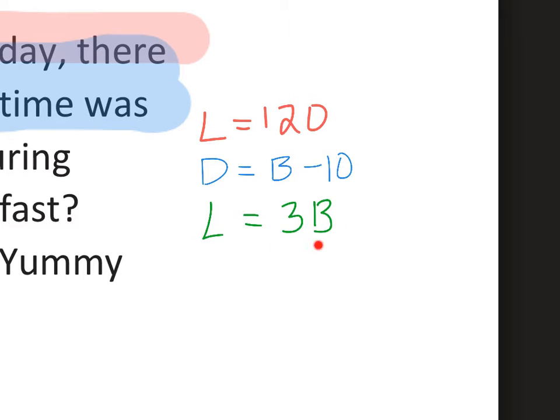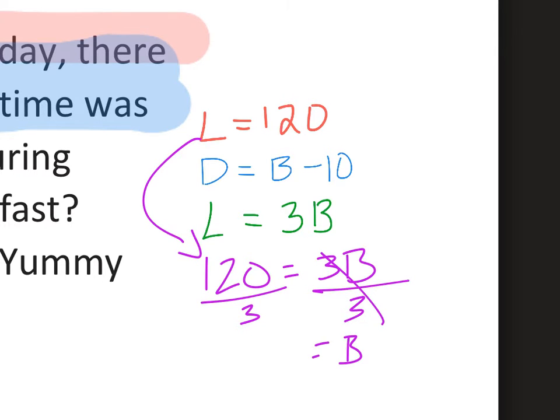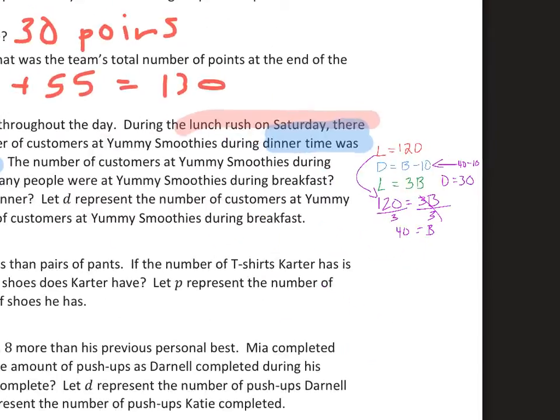And lunch is three times the amount of breakfast. Now, we know what lunch is. So this is the one we're going to use to help us solve for all the rest of it. So I'm just going to plug in my information there. Let's say that 120 equals 3B because I'm just plugging that information in. So I'm just going to divide both sides by three, and that will cancel that three out, leaving me B equals, and that's going to be 40. So breakfast is 40. And that means I can now plug in here and do 40 minus 10. And that's going to give me dinner equals 30.